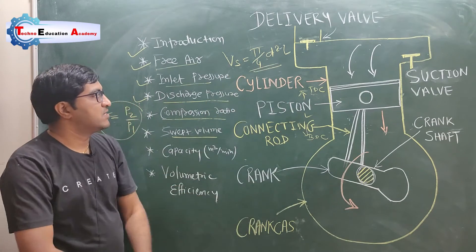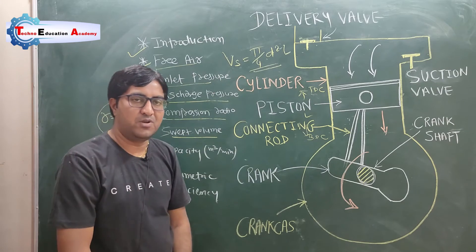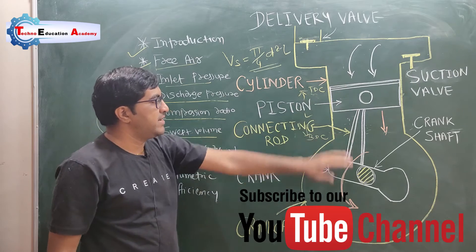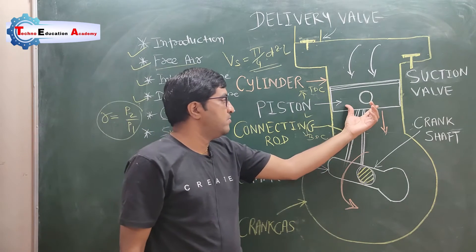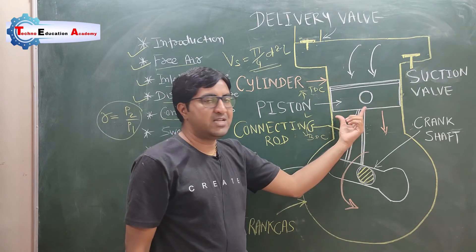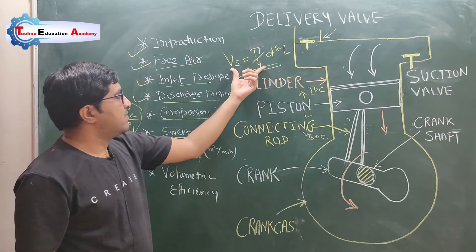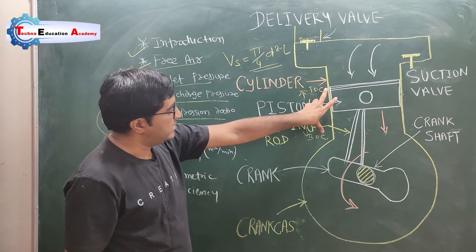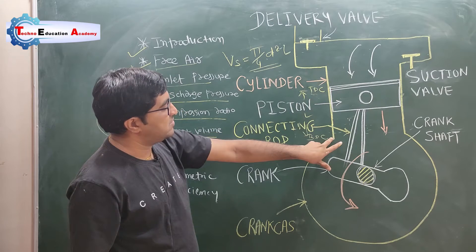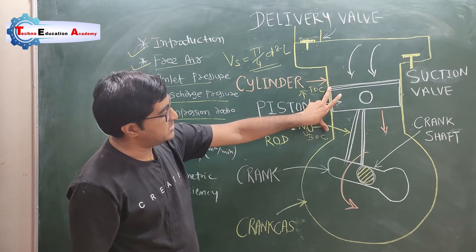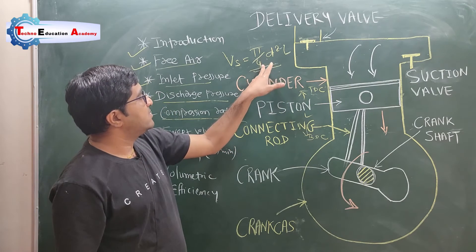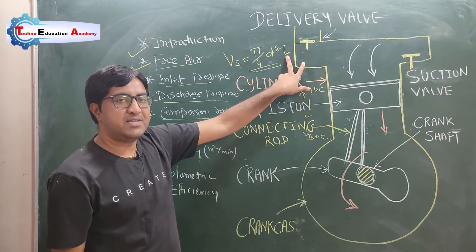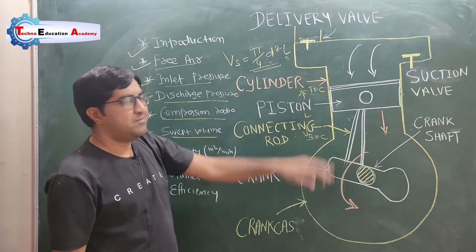This is the same equation as used in an IC engine, which we have already discussed. The area of the cylinder is (π/4) × D², with units of m², and the stroke length L is in meters, so swept volume = (π/4) × D² × L, giving units of m³.